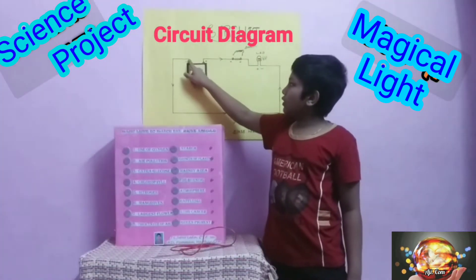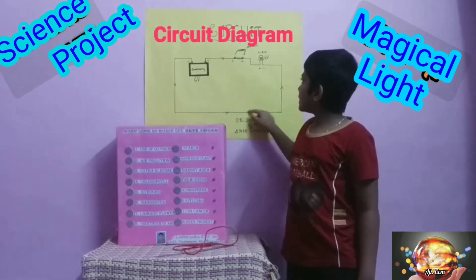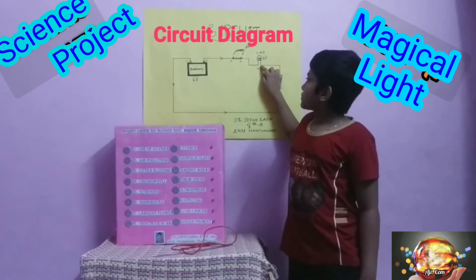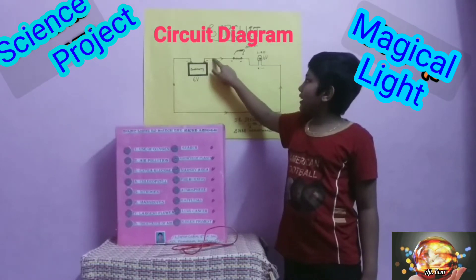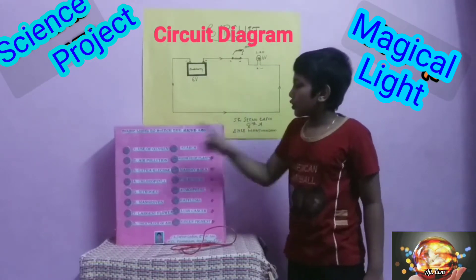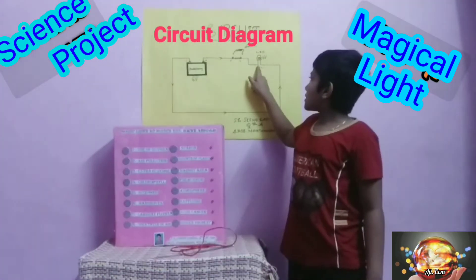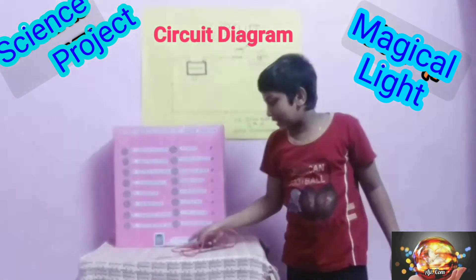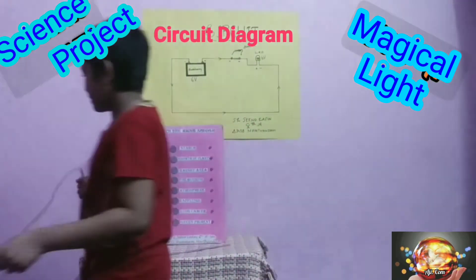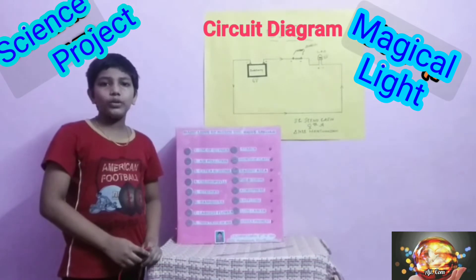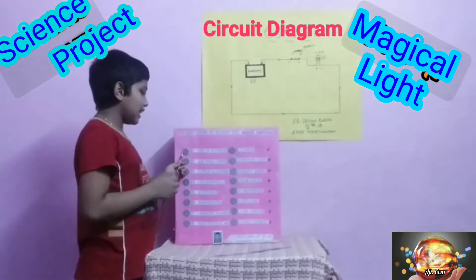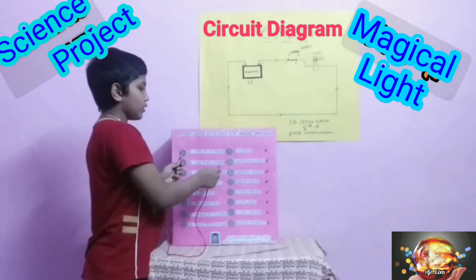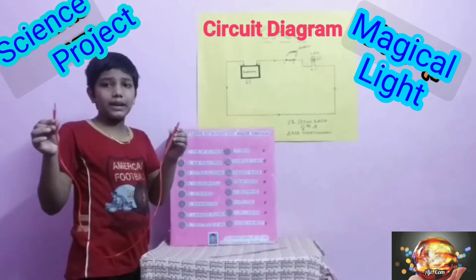The negative terminal of the battery is connected to the negative terminal of the LED. The positive terminal is connected to the positive. The positive terminal of the LED is connected to the answer. Let's see how it works — touch the positive terminal and touch the answer terminal with the connecting cable one by one.